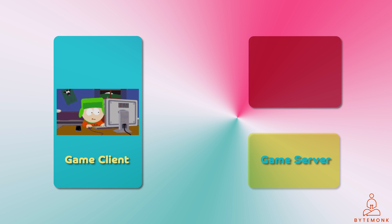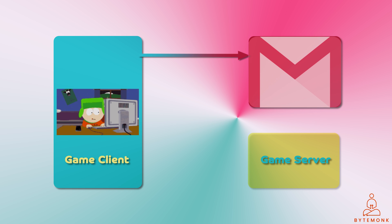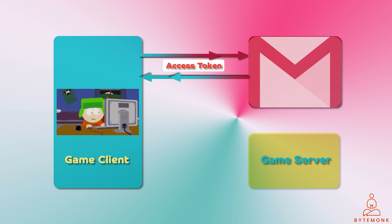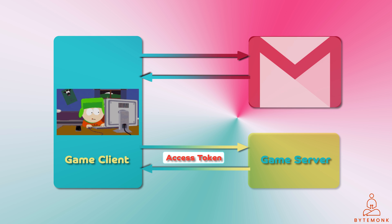The game website asks you to login to your Google account. You go to Google and login. Google gives the game's website a special code called an Access Token. The game website uses the access token to talk to Google and get your data, and then you can play the game.